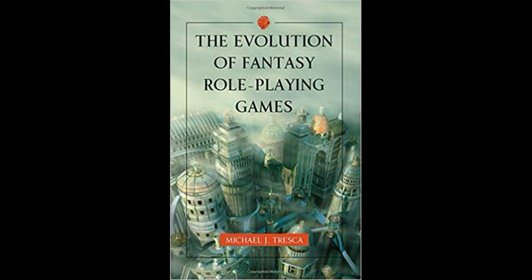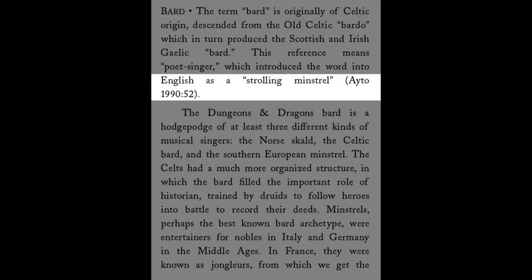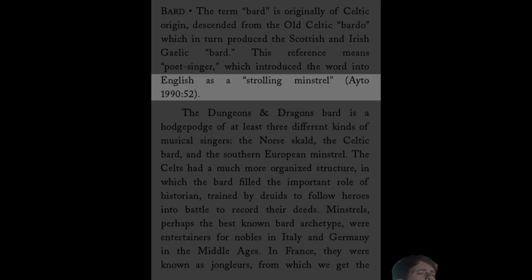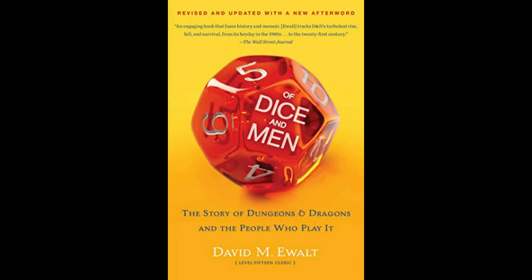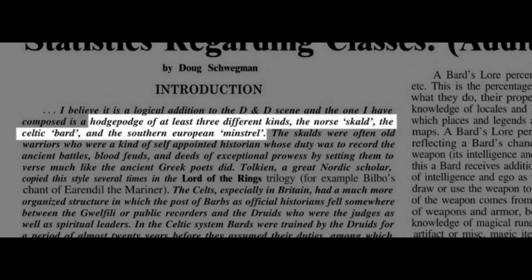According to The Evolution of Fantasy Roleplaying Games by Michael Tresca, the term bard is of Celtic origin, descended from the old Celtic term bardo. When the word was introduced into English, its meaning became that of a strolling minstrel. In Of Dice and Men, the story of Dungeons and Dragons, David Ewalt describes the bard as akin to the Pied Piper. But when the bard class was first introduced in Strategic Review magazine in February 1976, it states that the bard is a mix of at least three different kinds of musical singers: the Norse Scald, the Celtic Bard, and the Southern European Minstrel.